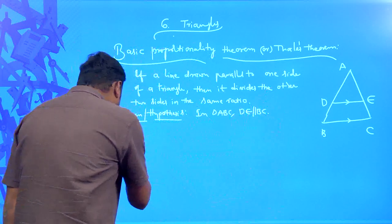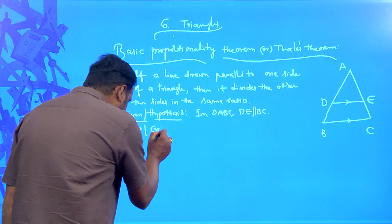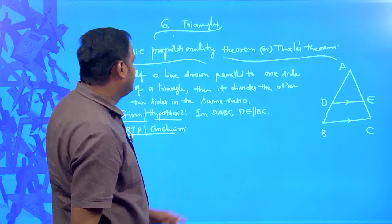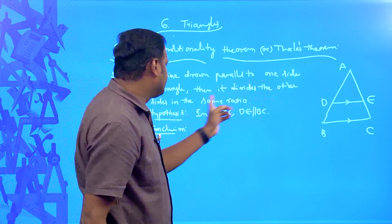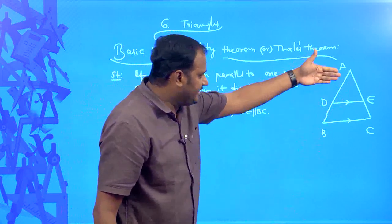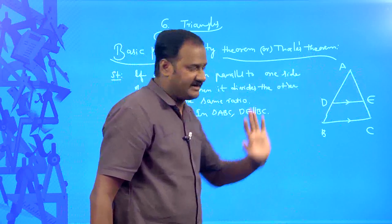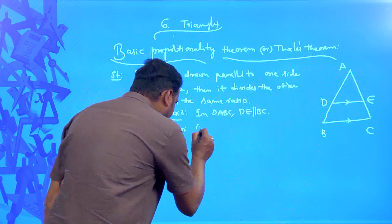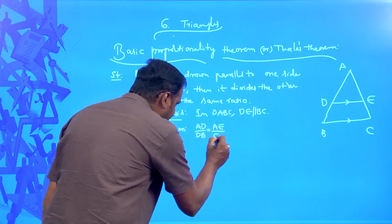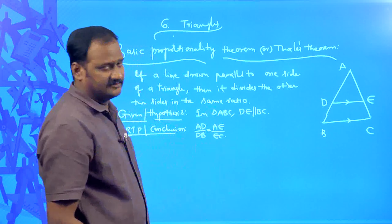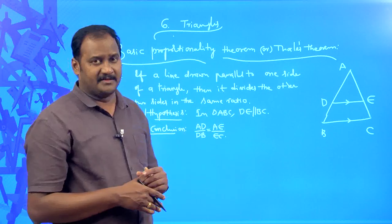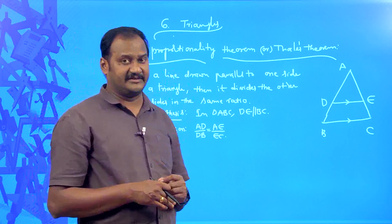And what is the RTP — required to prove? We need to prove that AD/DB is equal to AE/EC. This is what you need to prove.